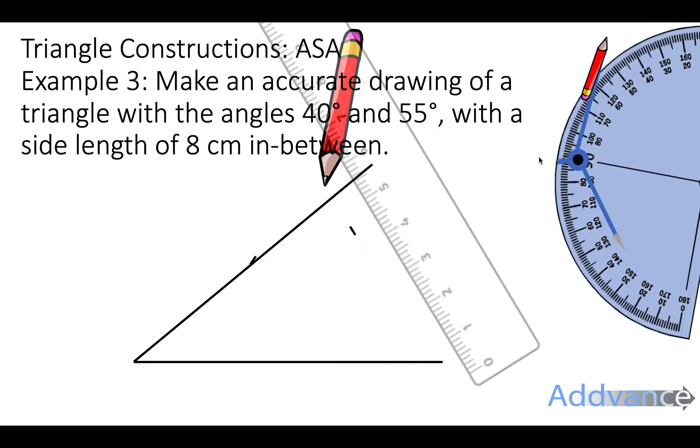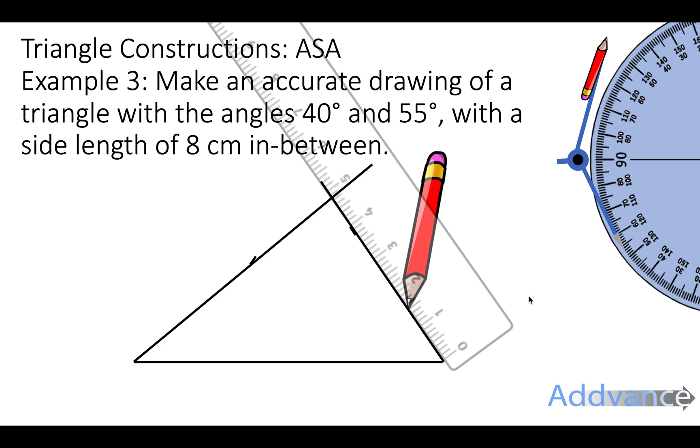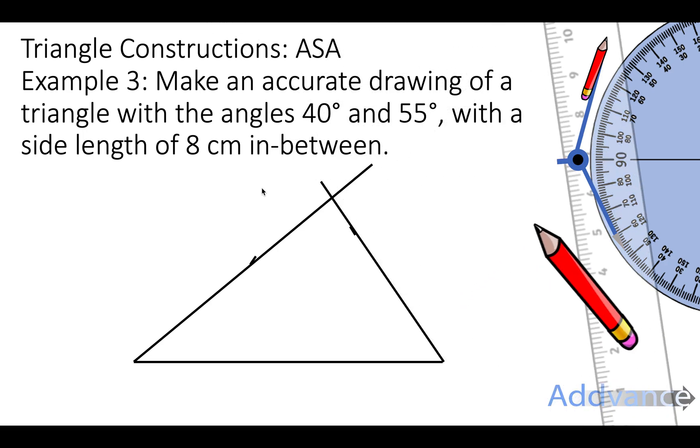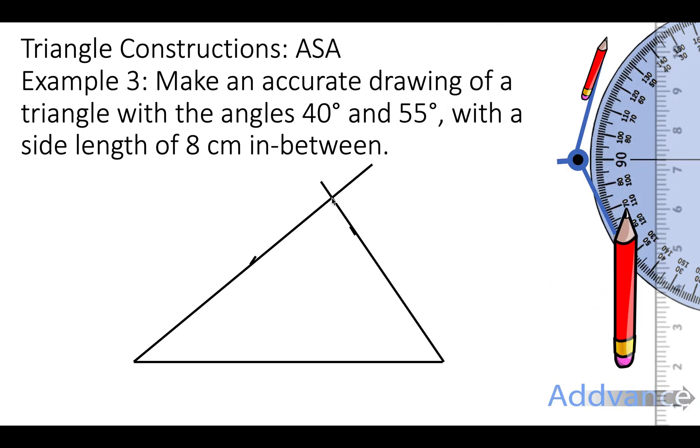Then we take our ruler and we draw a line from the dash to the tip of the line and make it really long. You'll then have these two lines crossing over at this point and that point completes our triangle.